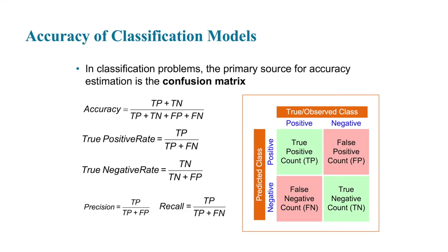Accuracy of the classification models: there are various formulas here. The primary source for accuracy estimation in classification problems is the confusion matrix. On the top you have the true or observed class; on the left you have the predicted class. This matrix helps you understand what will be easily confused by the model. This may come up in your future work in this course.